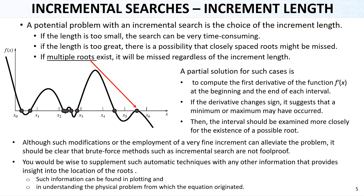In the incremental search methods — bisection, false position, and modified false position — the increment length is important. The incremental length choice matters because if it is too small, the search can be very time-consuming. If it is too large, there is a possibility that closely spaced roots might be missed, as you can see in the example with very close roots. If multiple roots exist, they may be missed regardless of the incremental length. For example, a tangent root may be missed if the increment is too long or too short.